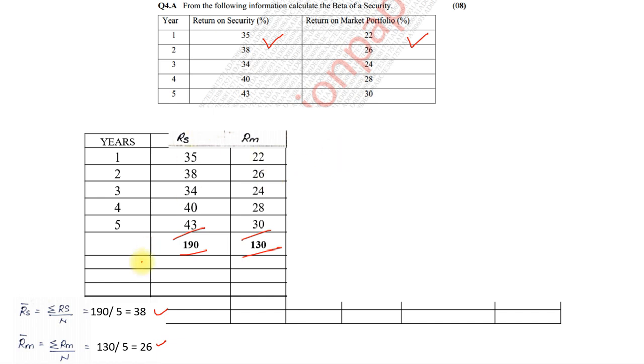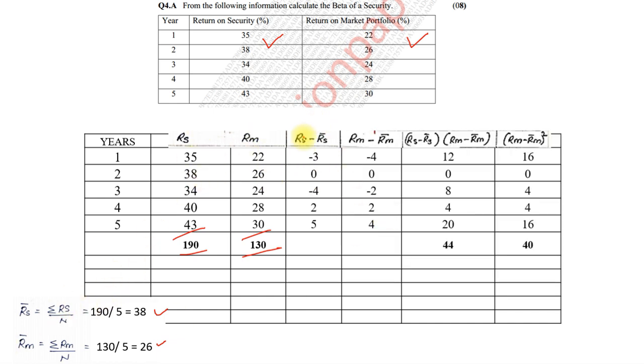Next column will be RS minus RS bar and RM minus RM bar. So, that will be 35 minus 38, 38 minus 38, 34 minus 38 and so on. And RM minus RM bar. So, 22 minus 26, 26 minus 26, 24 minus 26 and so on. Next step will be, where we need to find the product of both the columns. So, that will be RS minus RS bar into RM minus RM bar. We multiply, we get the total. And last will be RM minus RM bar the whole square, column and then total of that.